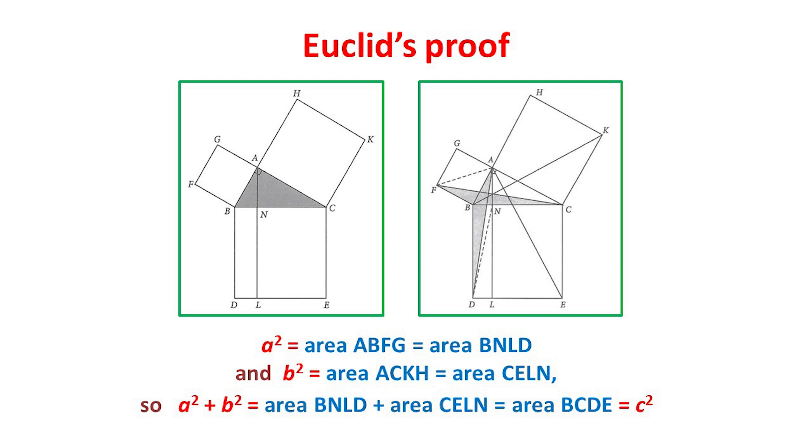Similarly, he showed that the right-hand rectangle has the same area as the upper right-hand square. It follows that the sum of the areas of the two upper squares is the same as the sum of the areas of the two rectangles which form the lower square. And this is the Pythagorean theorem.